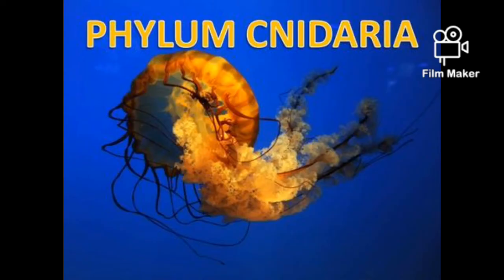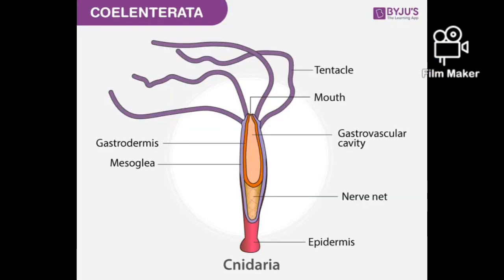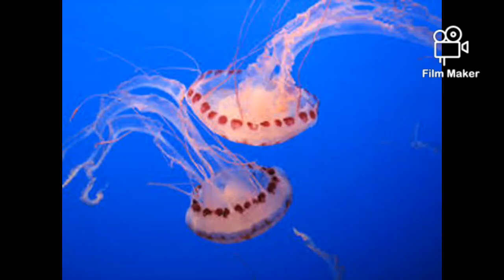The second type of phylum is Phylum Cnidaria, also called Phylum Coelenterata. These cnidarians are multicellular and fast-moving organisms. They are diploblastic organisms. They have a gastrovascular cavity and a primitive nervous system. They have the same opening for the anus and mouth, and this type is also called Hydrostome. They can do both sexual and asexual reproduction like fragmentation and budding. The main examples are jellyfish, corals, and hydra.